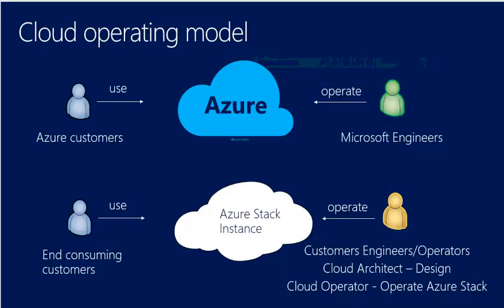The cloud operation model will look something like this: we have Azure customers, the operations engineer team, and then you see Azure Stack where it's sitting and who the customers are. We have cloud architects and operators. In another session I'm going to cover their roles, who they are, and who will be responsible for what. These are the high-level operation and ecosystem overview.